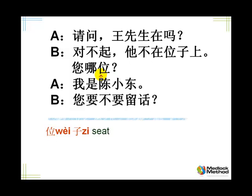哪位? 哪位 is which seat are you? So probably in times gone by, only very important people had seats. So when I ask you 您哪位, it means I think you are important, you have a seat — posh Chinese. 您哪位? Who are you?